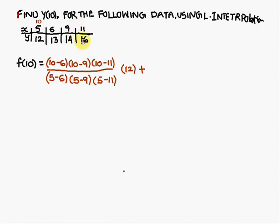To find the value at x=10, write 10 above the first x variable, which is 5. The numerator is (10−6)(10−9)(10−11), and the denominator is (5−6)(5−9)(5−11). Multiply this by the corresponding y value at x=5, which is 12.